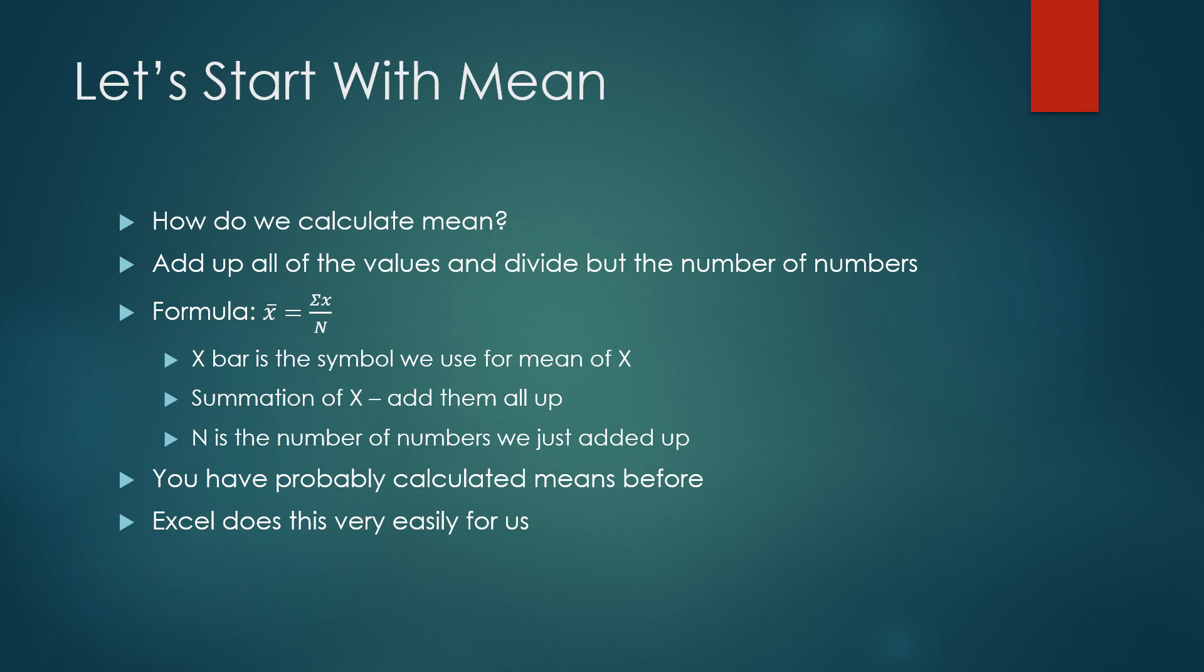Let's start with mean. Mean is basically the average. And how do we calculate mean? First of all, we add up all the values and we divide by the number of values. So many of you are probably familiar with the way to do that. This formula here shows us how to do that. X bar is actually a symbol for the mean. So the mean of X, some variable in a data set. What we do is we sum up all of X and we divide by the number of values that we had that was actually used to create or add up X. So X bar is a symbol that we use for the mean of X. The summation of X is to add them all up and N is the number of numbers we just added up. And like I said, you probably calculated this in Excel before, or probably calculated means before. And so what I'm going to do is show you how to do it in Excel.